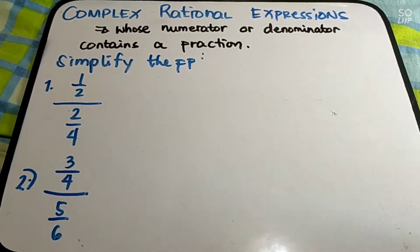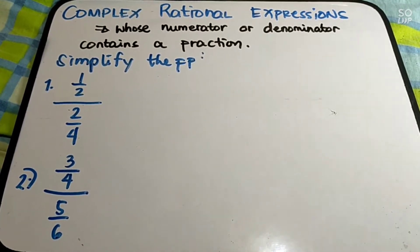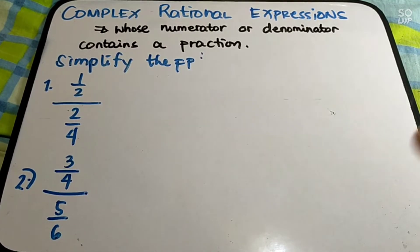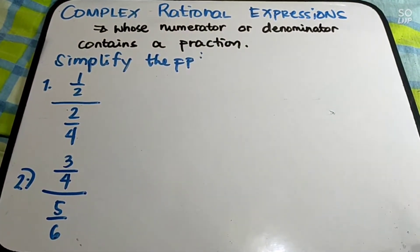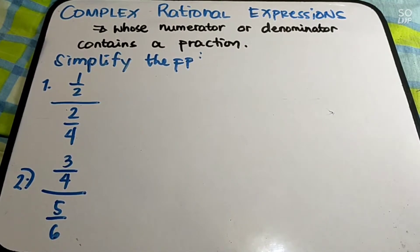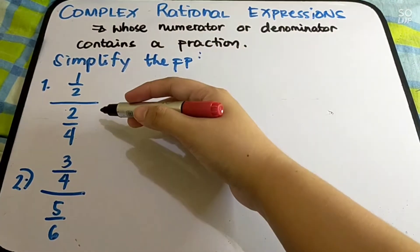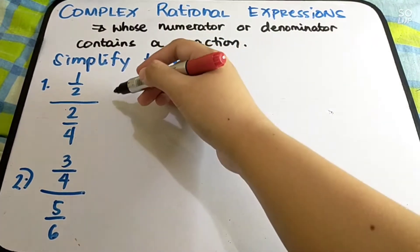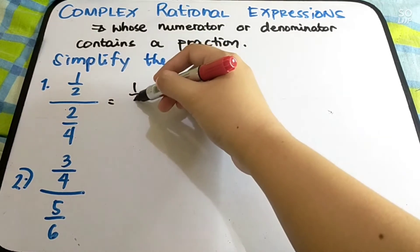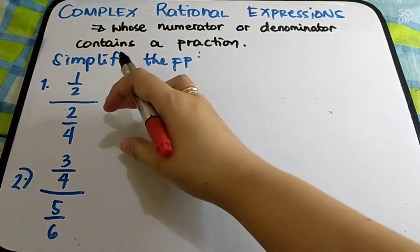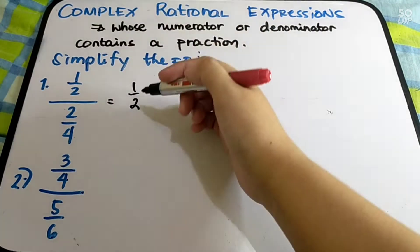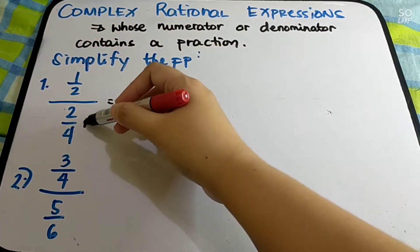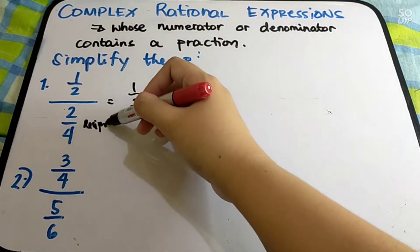Let us start with the easiest one to simplify. For example, we have 1 half over 2 over 4. So, this is the same as 1 half divided by 2 over 4. To simplify this, just copy the numerator which is 1 half, then find the reciprocal of the denominator.